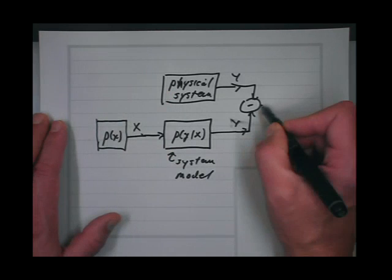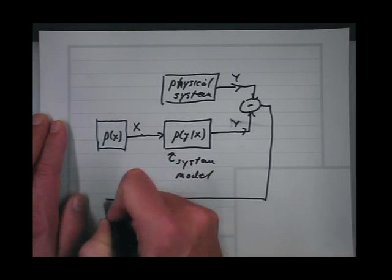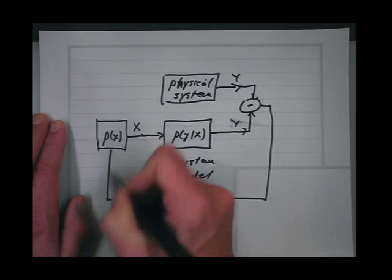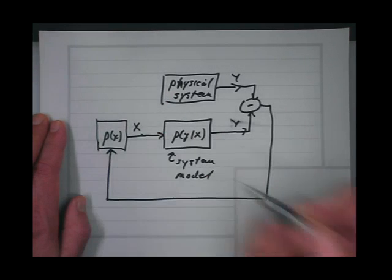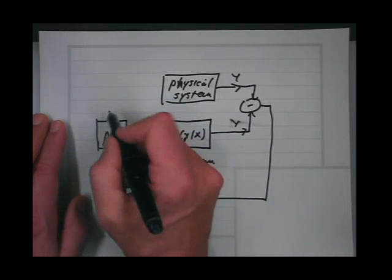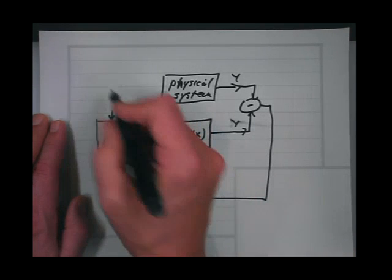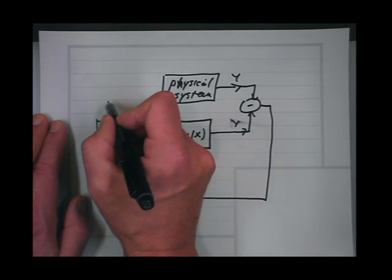So what we're going to do is come back and do optimization. In addition to this, things will get a little more complicated because we may have some unknown parameters of the system.